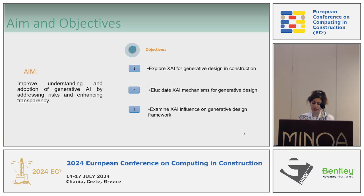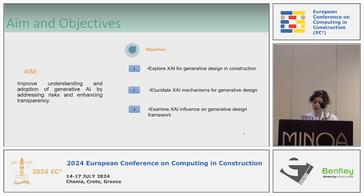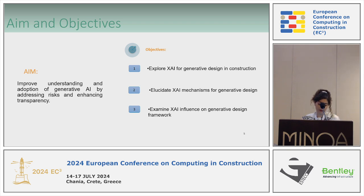This research aims to highlight and find the synergy that exists between explainable AI and generative design. The key point is to increase the scope of the designer's ability to manipulate design rules. The objectives are: systematically review the application of explainable AI in generative design, explore explainable AI for generative design in construction, elucidate explainable AI mechanisms for generative design, and examine explainable AI influence on generative design frameworks.